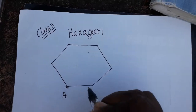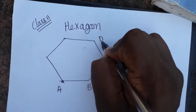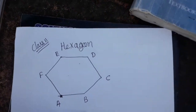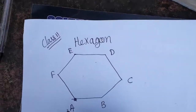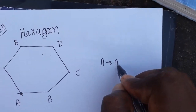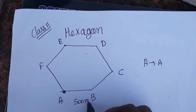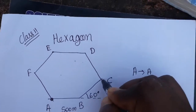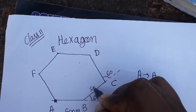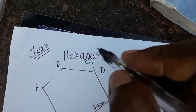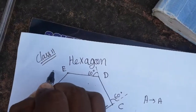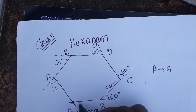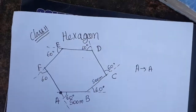The object starts from A, goes to B, then C, D, E, F, and again back to A. I will cover three cases total. In Case 1, the object starts from A and ends at A. Every 500 meters, the object makes a 60-degree turn — at B, C, D, E, and F. Six turns of 60 degrees gives 360 degrees, so the object returns to the same starting position.